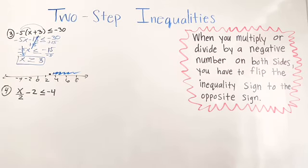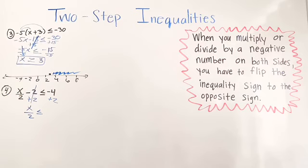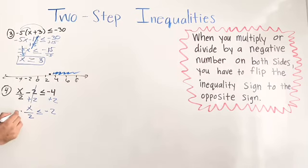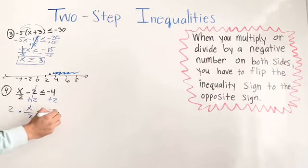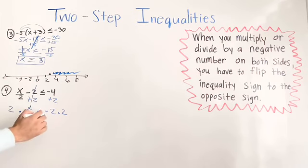For number 4, we have x divided by 2 minus 2 is less than or equal to negative 4. We do the opposite of negative 2, which is positive 2, on both sides. This cancels, leaving x over 2. With two different signs on the right side, we subtract, getting negative 2. Then multiply both sides by 2, giving us x is less than or equal to negative 4.